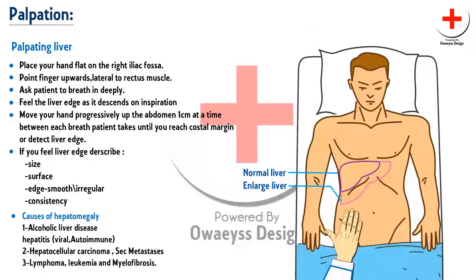Causes of hepatomegaly include alcoholic liver disease, hepatitis, hepatocellular carcinoma, lymphoma, leukaemia, and myelofibrosis.